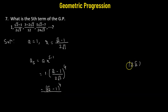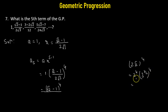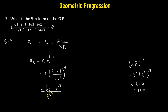The denominator is 2 raised to the power of 4 multiplied by 3 raised to the power of 1/2 times 4 — that is, 3 raised to the power of 2, which is 9. So 2 raised to the power of 4 is 16 times 9 equals 144. Therefore, the fifth term is square root of 2 minus 1 raised to the power of 4, all divided by 144.